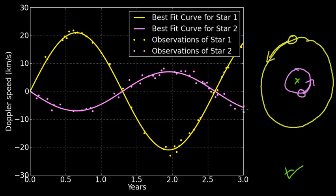This data alone — just measuring these speeds — allows us to determine the individual masses of these two objects. We can already see that the orbit of one of them is much larger than the other, so it must be less massive. The gravitational effect on star two, the purple one, is smaller. They have the same force, but that same force has less effect on star two than on star one, so star two must be more massive than star one.